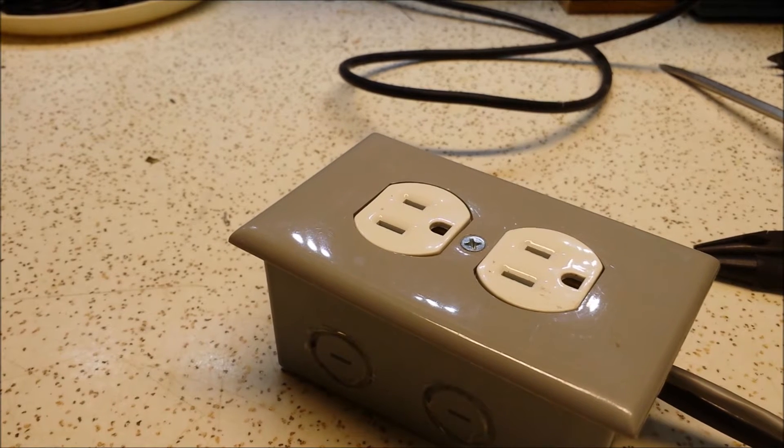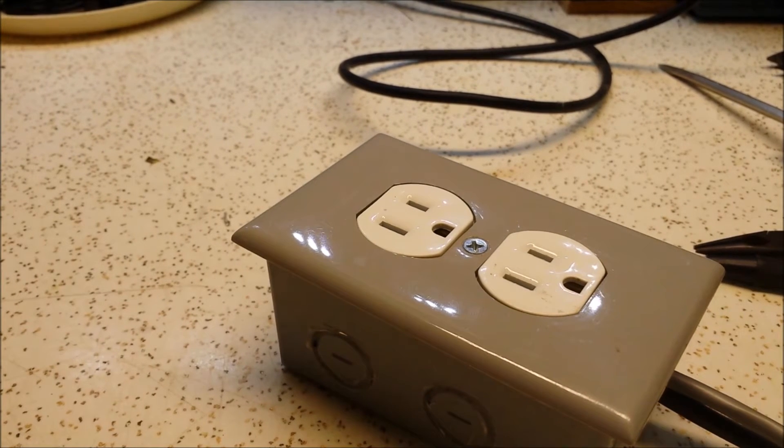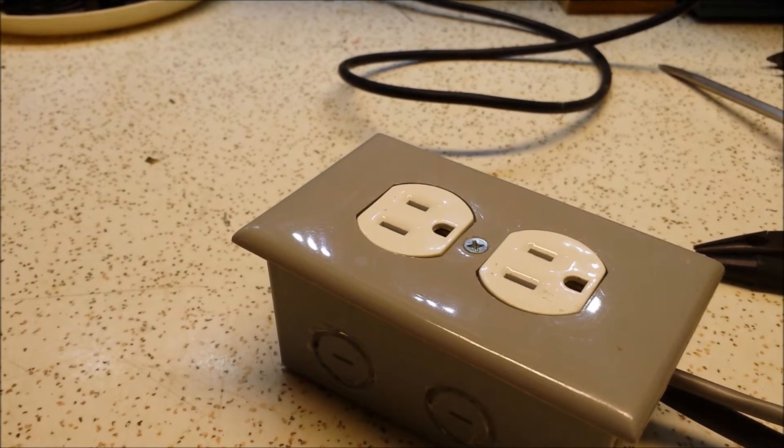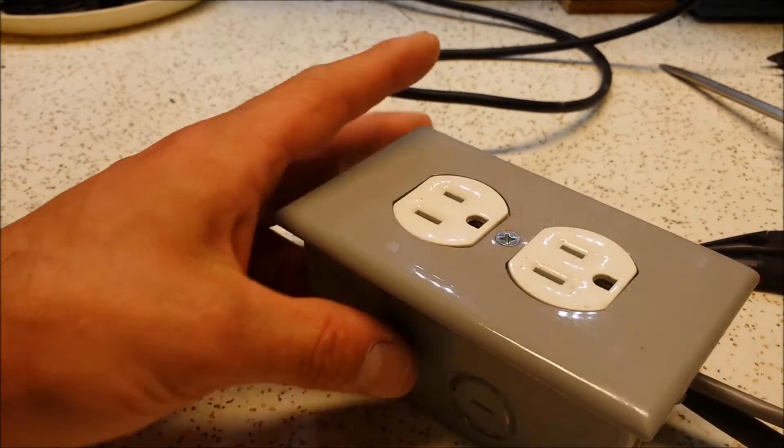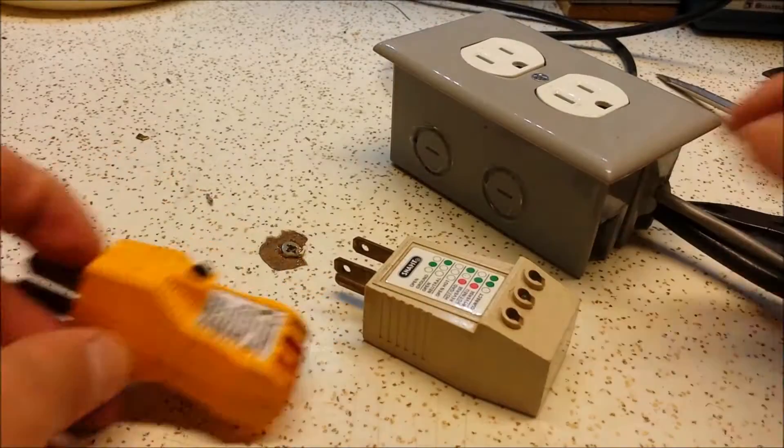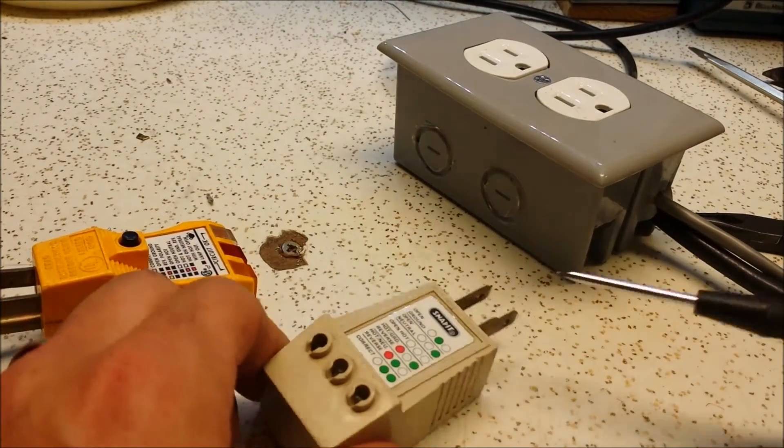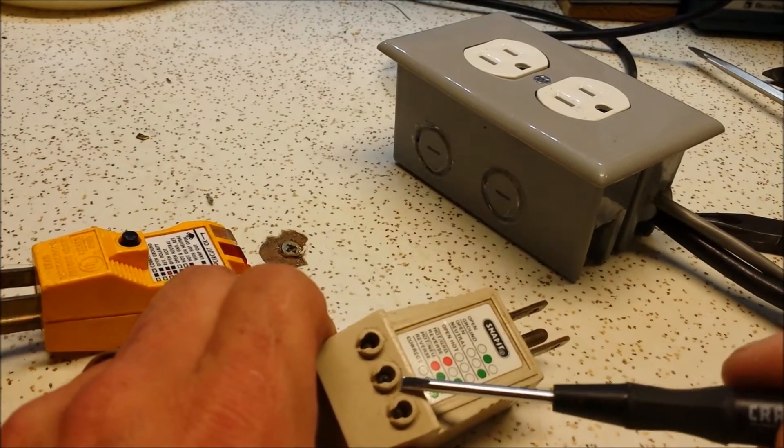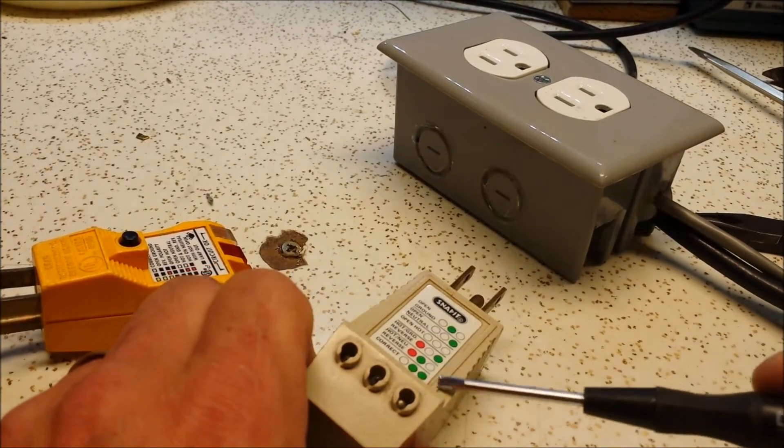So now what we're going to do is we're going to get a plug tester and we're going to test the circuit and make sure we wired it up correctly. So you'll take your plug in here and you'll plug it into the wall. Now this is a plug tester. As you can see, you just plug it in and it gives you lights that indicate the correct polarity.